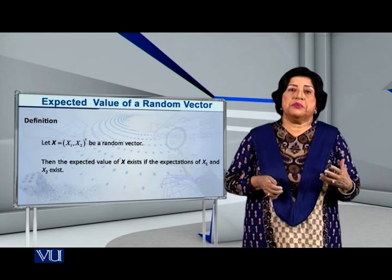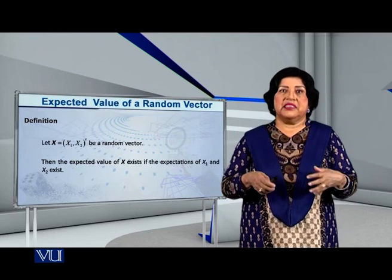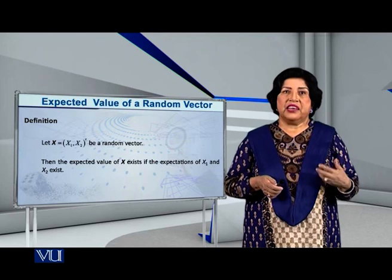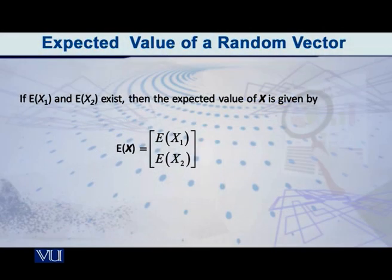And students, the formula or the expression is very interesting, as you can see now on the screen. The expected value of the random vector X is the vector of the expected values of x1 and x2. Isn't that interesting? I repeat, the expected value of a random vector is the vector of the expected values of those random variables.